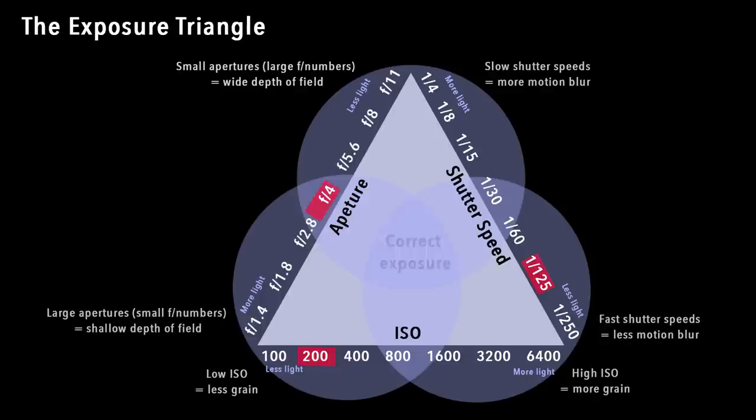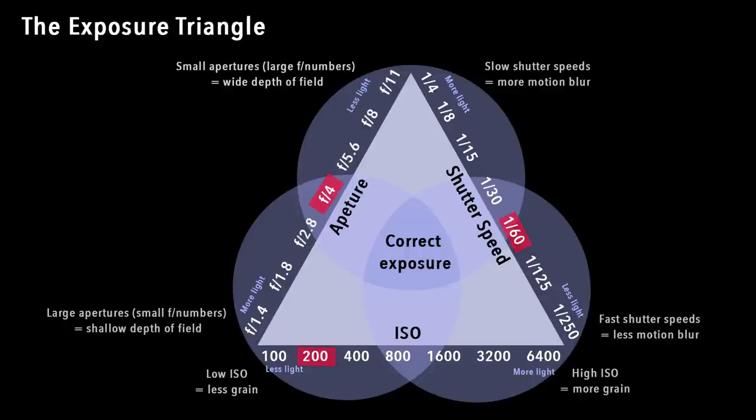Say you change your aperture to f4. So effectively now you've closed down a little bit and less light is reaching your sensor. Now you need to compensate for that. You can either compensate for it by increasing the sensitivity of your sensor, so upping your ISO — effectively moving from 200 to 400, a one stop difference. Or you can allow your sensor to receive light for a longer period of time by changing your shutter speed from 1 over 125 to 1 over 60, effectively leaving it open longer to compensate for less light reaching it.